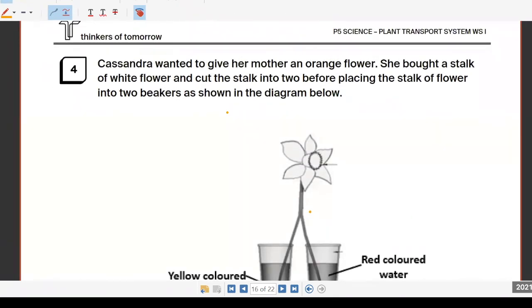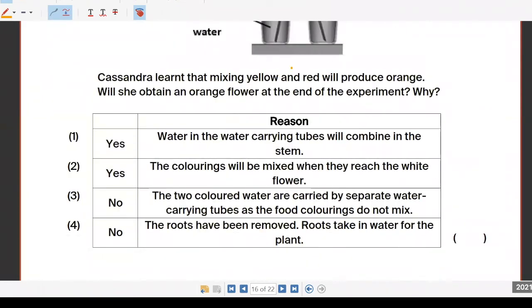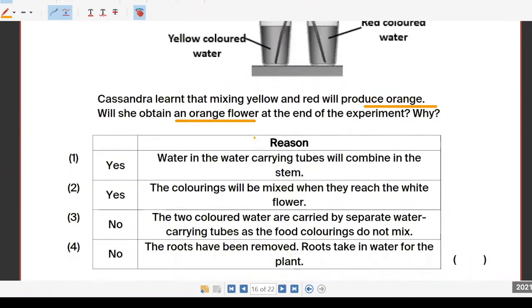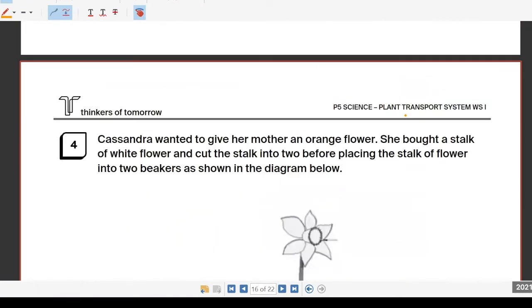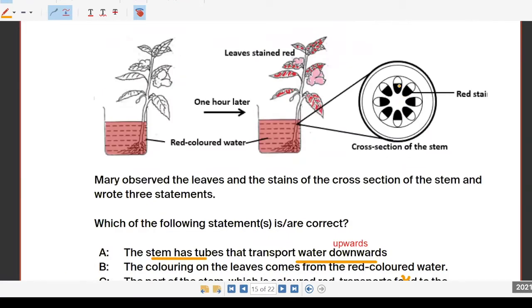Question four, not easy. Will she obtain an orange flower? I got two different answers. I got the water carrying tubes. Water is inside the shaded ones. So if I were to cut the stem into half and split the stem into two, and then put one side onto one color, the other side to another color, can the tubes mix?